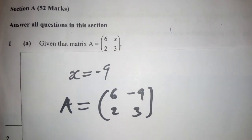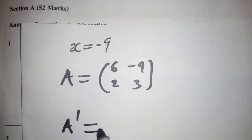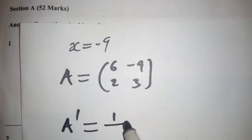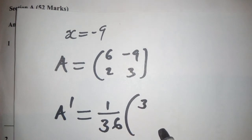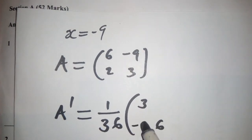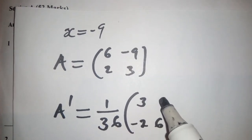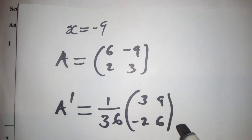We say A inverse is equal to 1 over the determinant, which is 36, multiplied by 3, 6, negative 2 and positive 9.